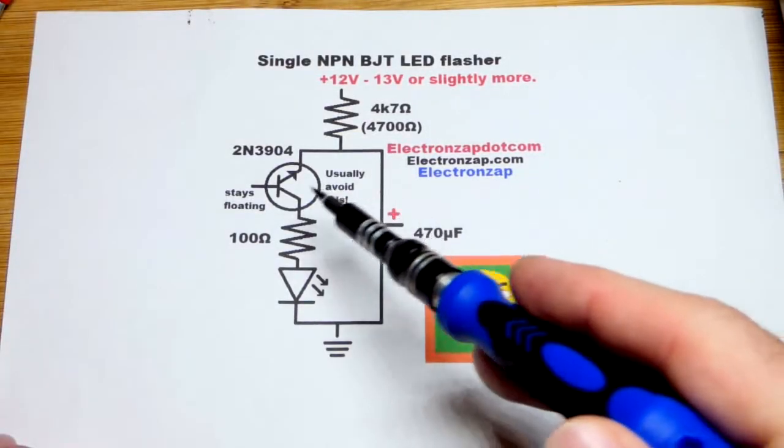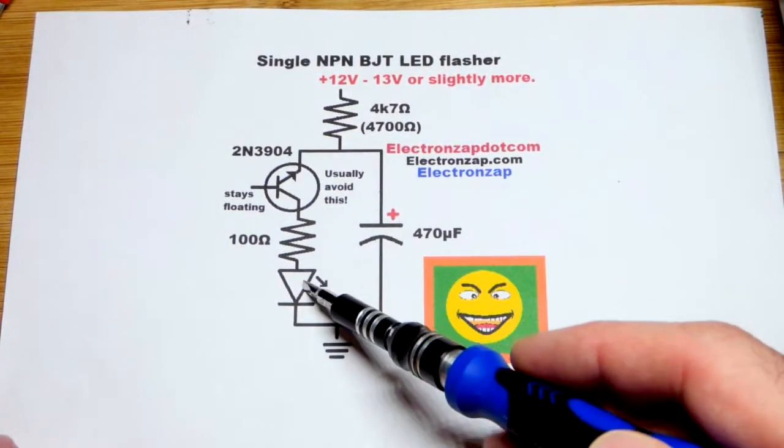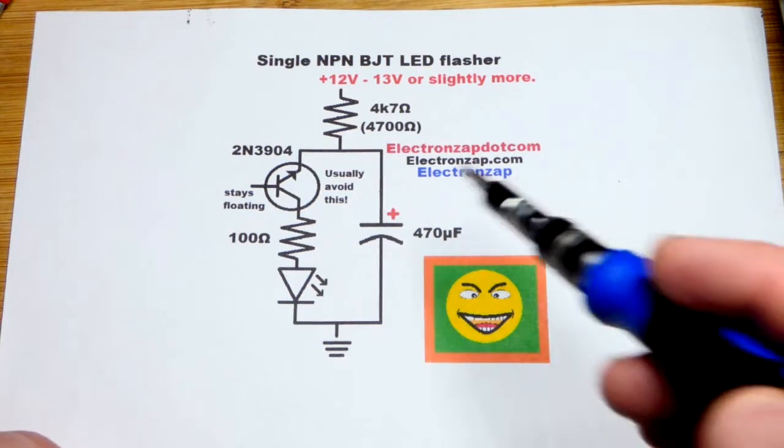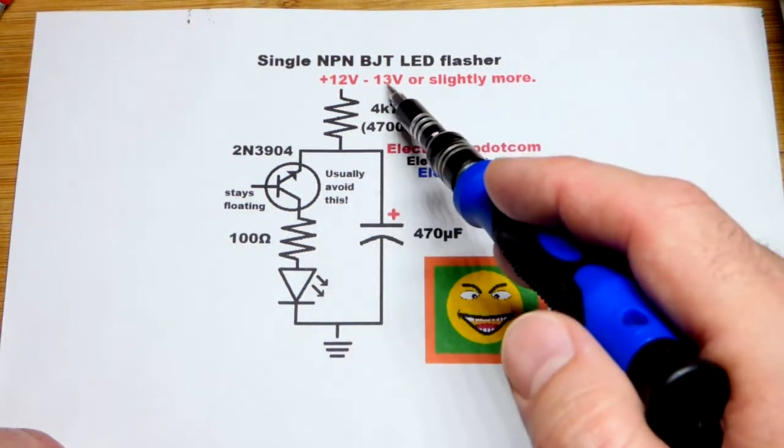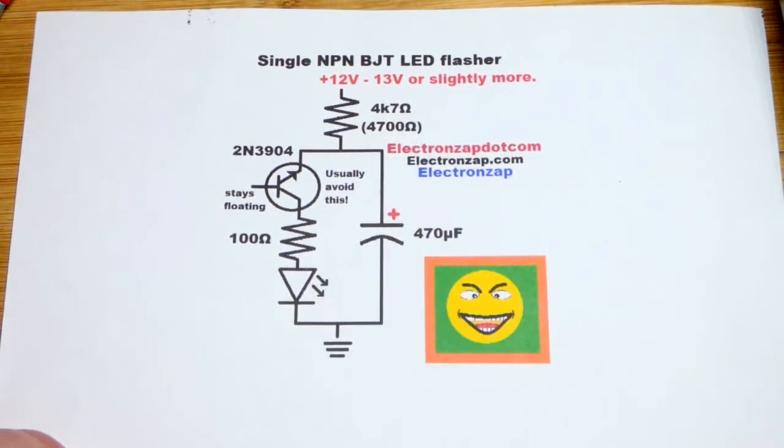So now in this video we're going to use a single transistor to flash an LED on and off. I seem to need to use at least 12 volts for a red LED and 13 volts for a blue LED.